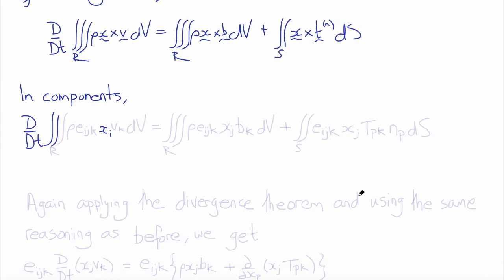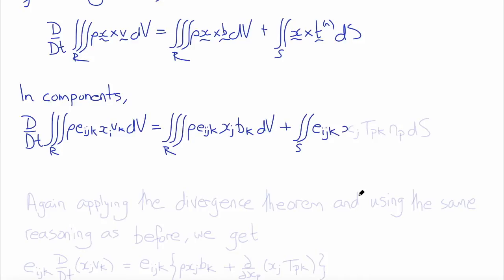Writing this in component form again, we have the material derivative of the volume integral equal to the integral over r of rho times the permutation symbol times x_j v_k integrated with respect to volume, plus the surface integral of the permutation symbol times x_j times n_p integrated with respect to surface.